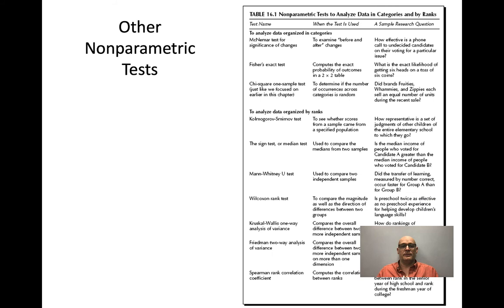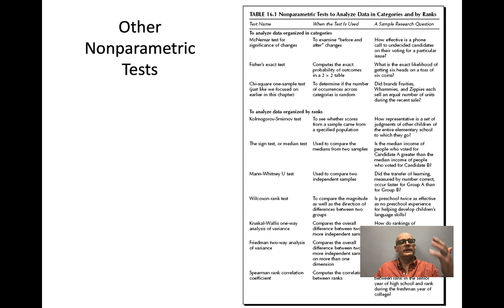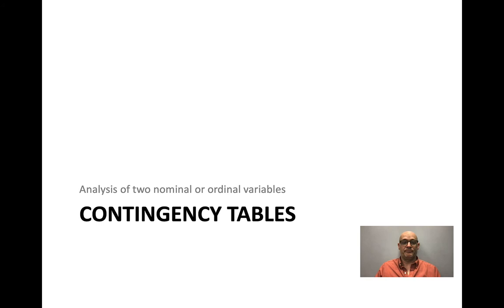There are many different non-parametric tests — the Mann-Whitney U, the Wilcoxon rank test, the Wilcoxon rank sum test, the Spearman rank, Kruskal-Wallis, and others. Non-parametric tests are pretty powerful with small sample sizes. They all report a test statistic and a p-value. That p-value is what you care about: how likely is it that the groups are the same?